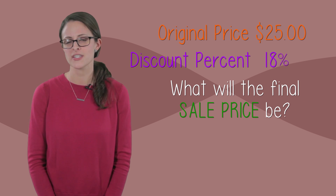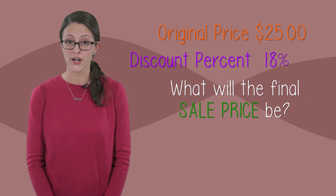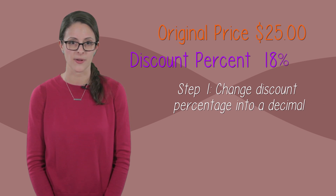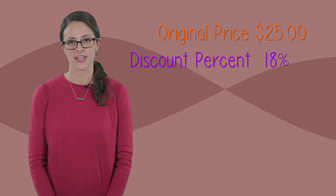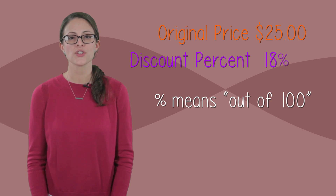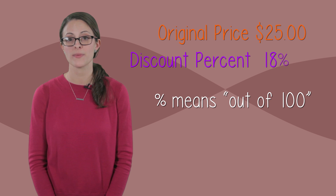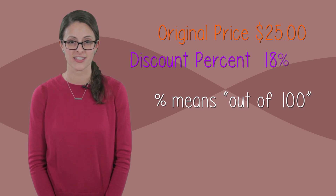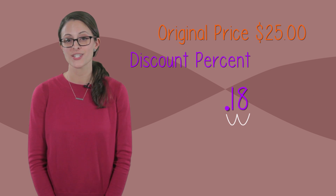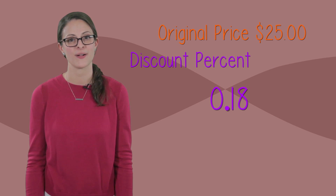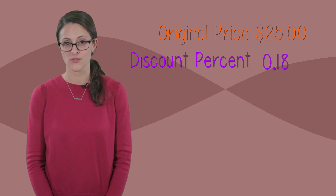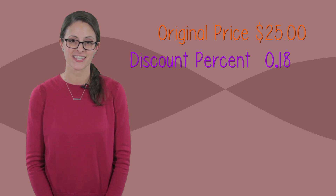What are we going to pay after the discount is applied? First, I need to take this discount percentage and change it into a decimal. Our discount percentage is 18%. I know that percent means out of 100. So to turn this into a decimal, I have to move my decimal point two spots to the left, because there are two zeros in 100. We move one, two, and now we have our decimal — 0.18, or 18 hundredths. 18 hundredths represents our 18% discount.